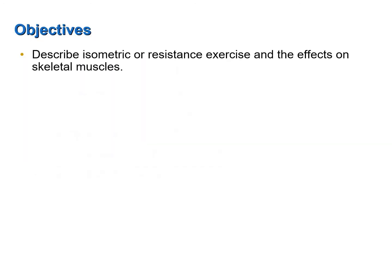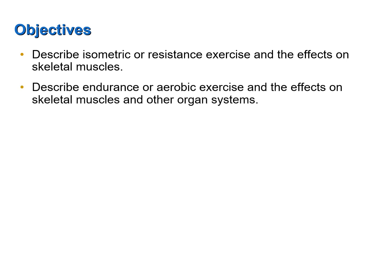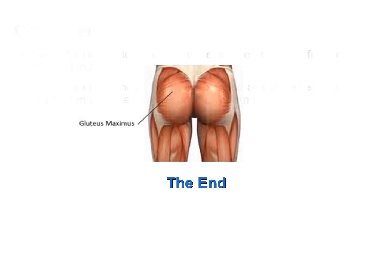Now let's review the objectives of the screencast: describe isometric or resistance exercise and the effects on skeletal muscles; describe endurance or aerobic exercise and the effects on skeletal muscles and other organ systems. This marks the end of our discussion on muscles.